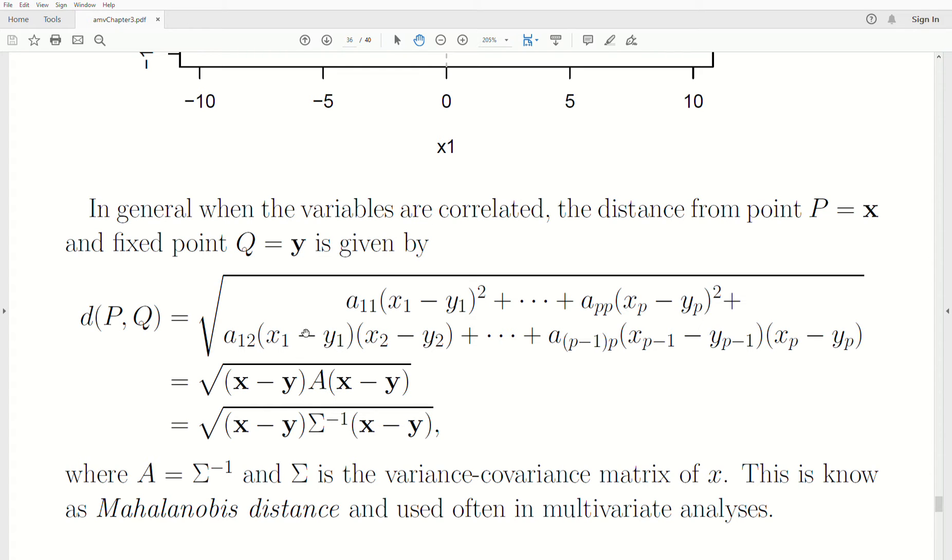So it's some number, first component, the difference of the first component times the difference of the second component. Then the difference of the first component times the difference of the third component. All the way to the very last possible pairwise multiplication. We take the difference of the p minus 1th component times the difference of the pth component. And each one of these are multiplied by some number. Now these numbers have to be special because distance always has to be positive. So these numbers have to be such that it makes this positive.